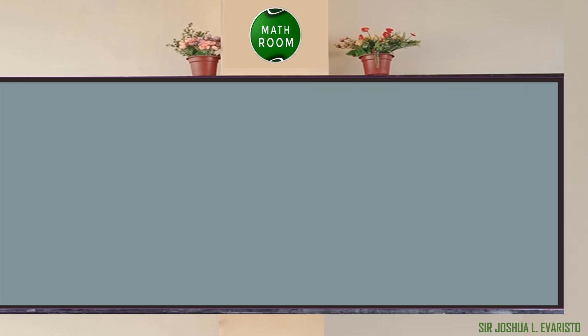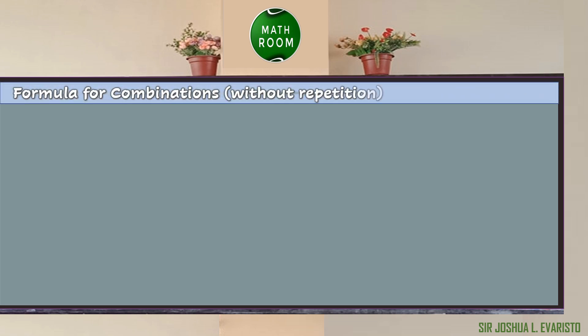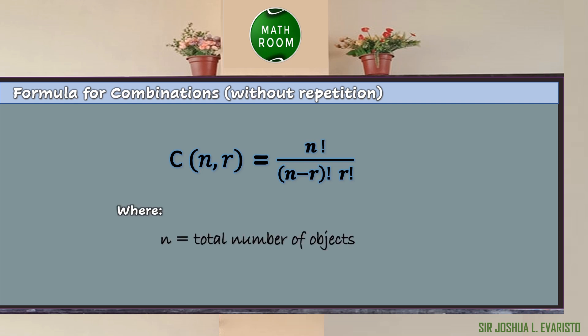Listing all combinations of n objects taken r at a time is time-consuming, which is why we have a formula. The formula for combinations of objects without repetition is: C(n, r) = n! / [(n − r)! × r!], where n is the total number of objects and r is the number of objects taken at a time.